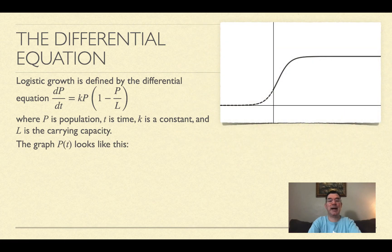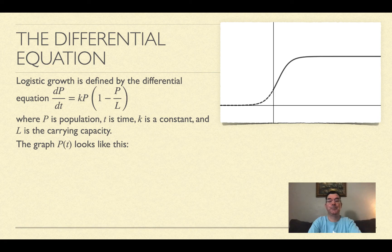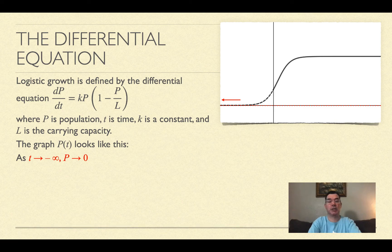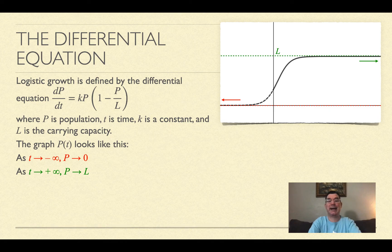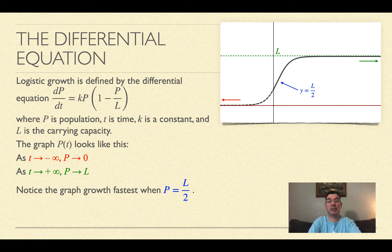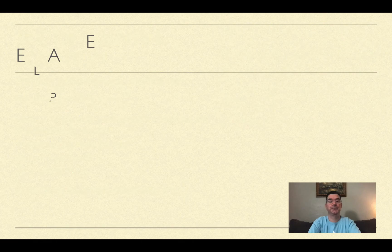The graph of P(t) looks like this. There are two horizontal asymptotes. As t goes to negative infinity, P approaches zero, and as t approaches positive infinity, P approaches L, that carrying capacity. The graph grows fastest when the population is half of the carrying capacity, L/2.